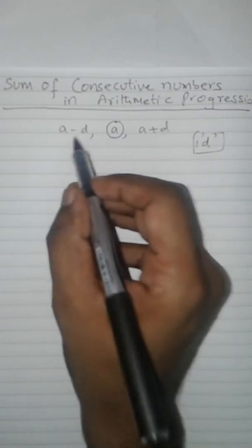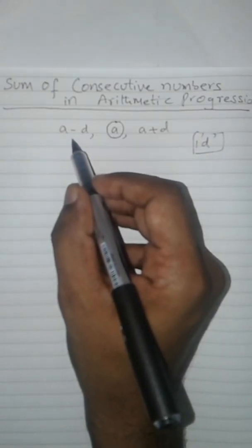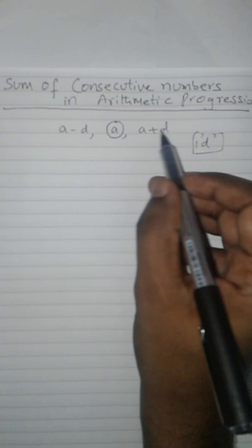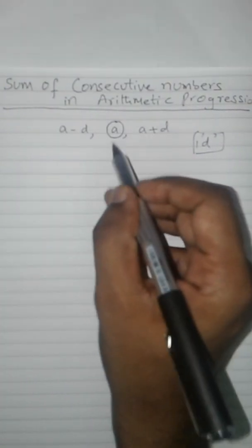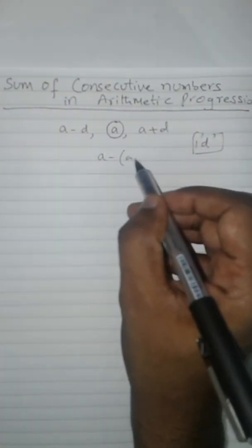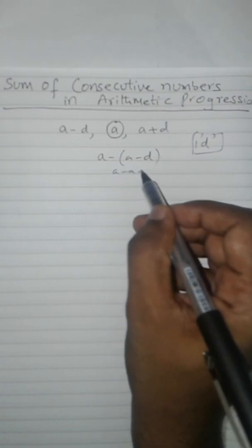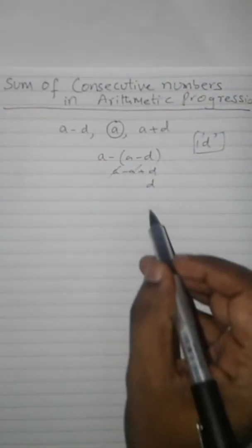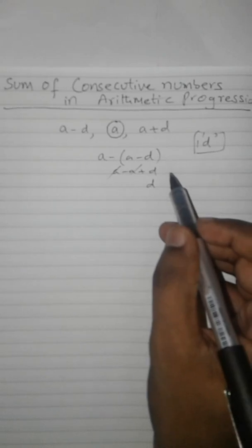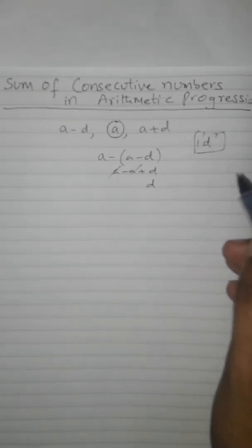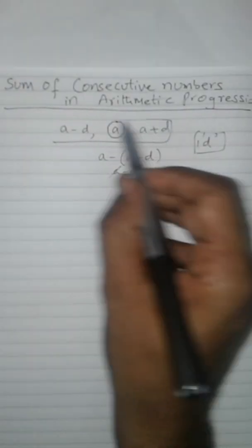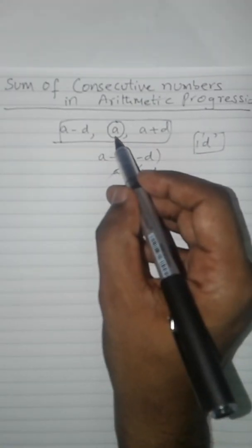I have taken the preceding number as a minus d and the following number as a plus d. If I subtract a minus d from a, my difference is just d. That's what I need for the sum of consecutive odd numbers: a minus d, a, and a plus d. Remember, the center should always be a.